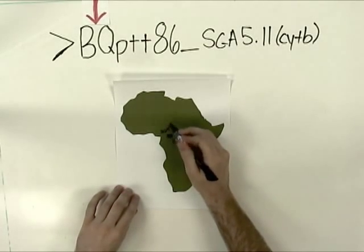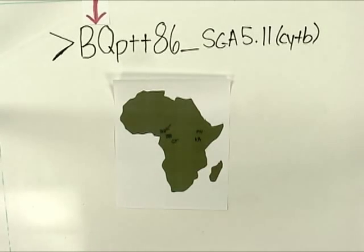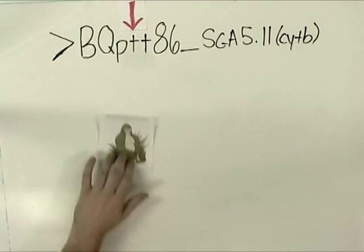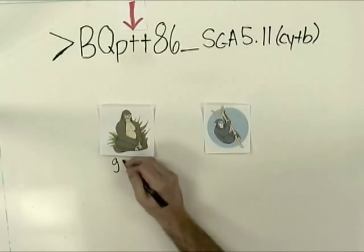The first two letters identify the site where the sample was collected. The next part of the label tells you which species of ape the sample came from.